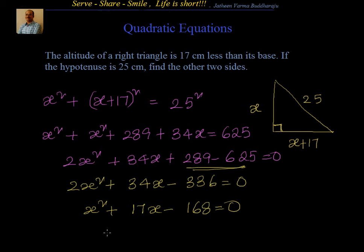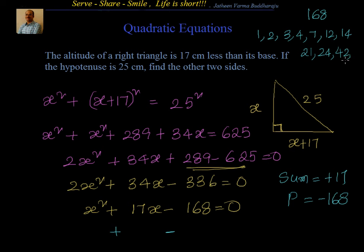We need two numbers such that sum equals plus 17 and the product equals minus 168. Again, the product is negative, that means I need two numbers, one is plus and one is minus. So I need a difference of 17 between them. Let's write down the factors of 168. One, two, three, four, seven, 12, 14, 21, 24, 42. We need a difference of 17, so we have 24 and 7. We'll write it as x square plus 24x minus 7x minus 168 equal to 0, which can be written as x into x plus 24 minus 7 into x plus 24 equal to 0.